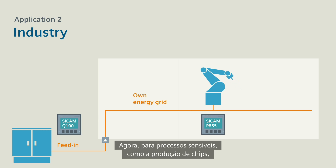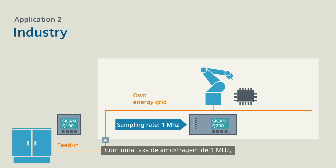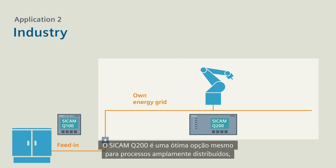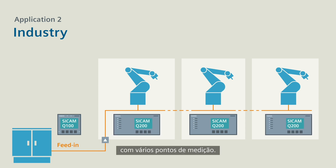For sensitive processes, such as chip manufacturing, it is better to use a CCAM Q200. With a sampling rate of 1 MHz, the CCAM Q200 can also acquire extremely fast transients up to 6 kV. The CCAM Q200 is optimally suited even for widely distributed processes with multiple measuring points.